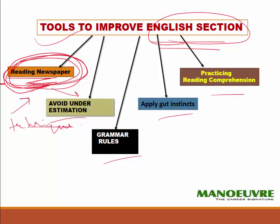You also have to avoid underestimation. If you belong to a non-English or non-convent school, or come from a vernacular background, you do not need to underestimate your own abilities. You are still able to crack NPAT just as easily as those from a convent background. You need not underestimate yourself. You can do it, and you should do it, simply by applying these techniques. First of all, you need to come out of your mental blockage — stop underestimating yourself. This will go a long way in scoring good marks in any English section.